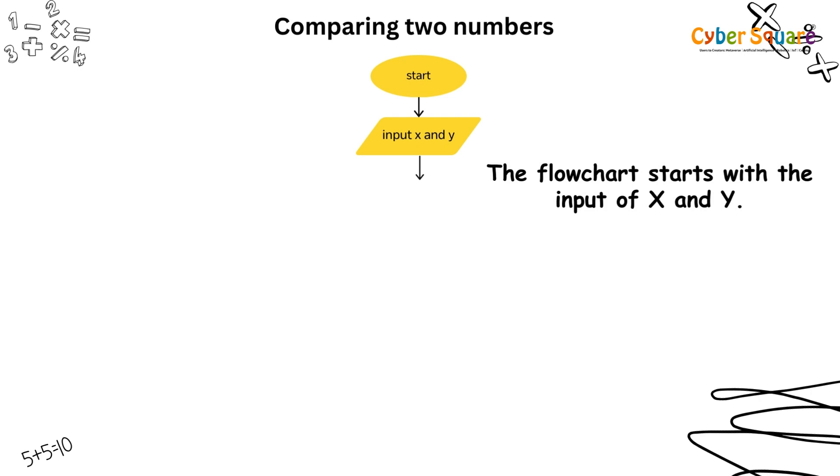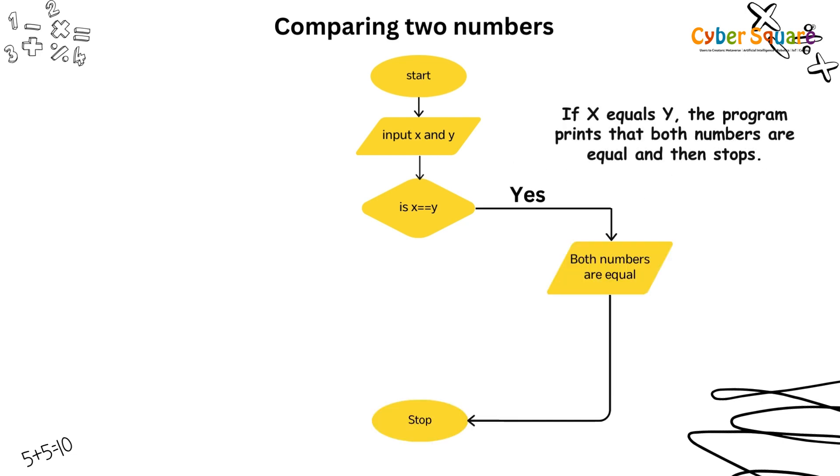Here, the flowchart starts with the input of x and y. Then, it checks if x is equal to y. If x equals y, the program prints that both numbers are equal and then stops.